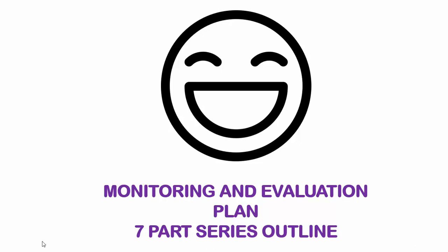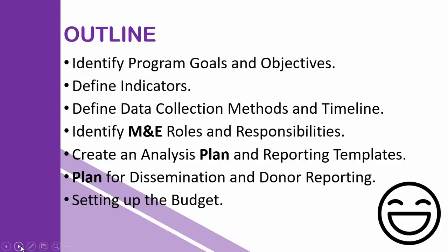So what are we going to learn in this seven-part series? The first thing you're going to learn is how to identify program goals and objectives. A lot of times when we are defining these things, it's not done the right way. So I'm going to show you how it should be done so that as you begin to set this M&E plan document, it is done the right way from the start.